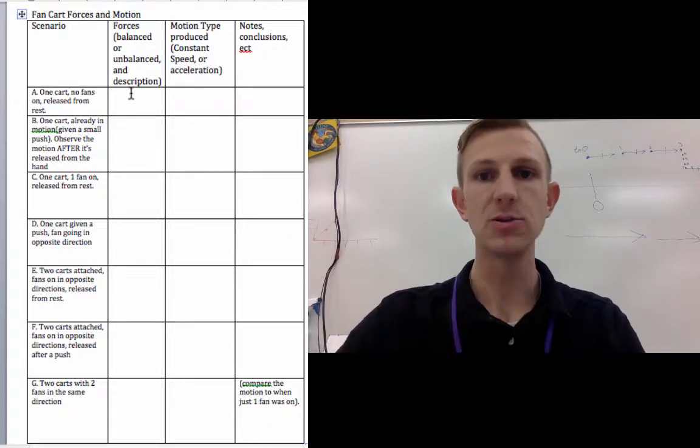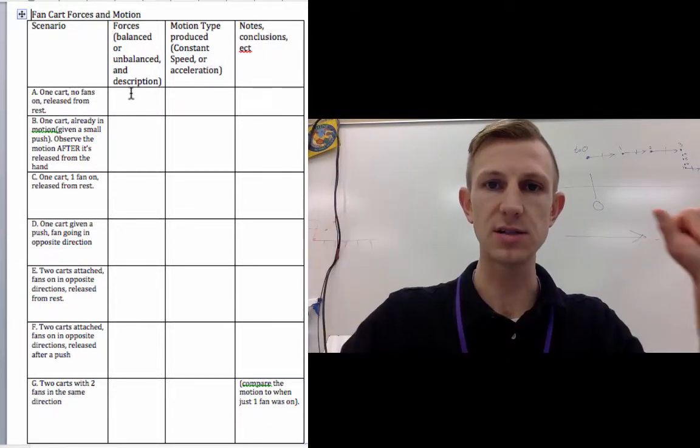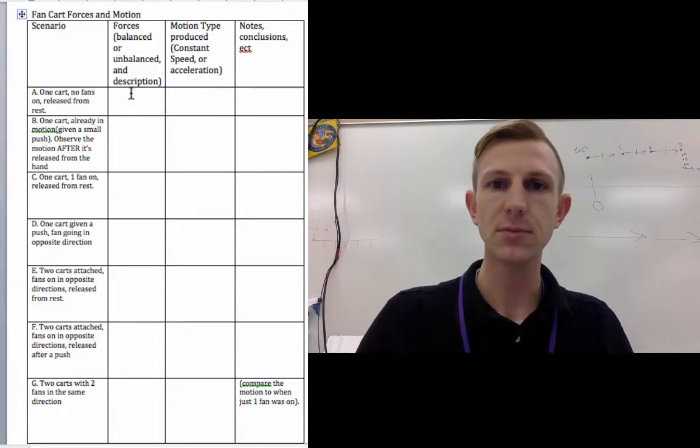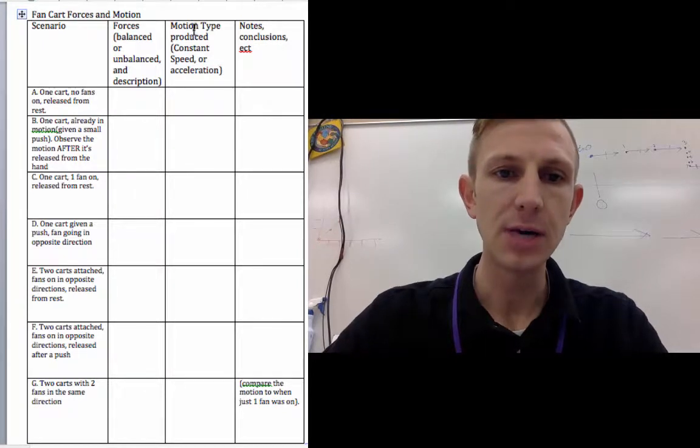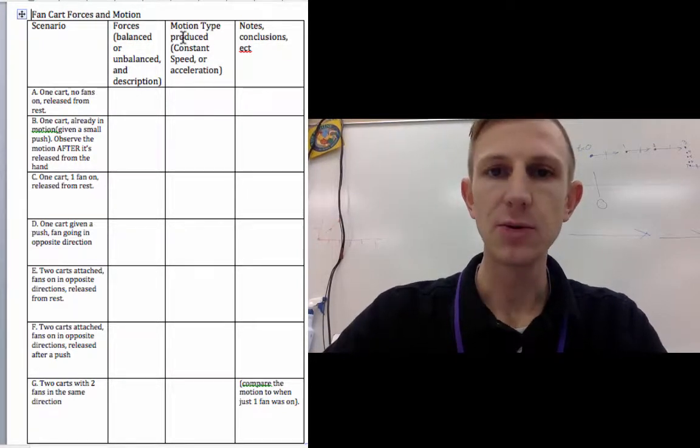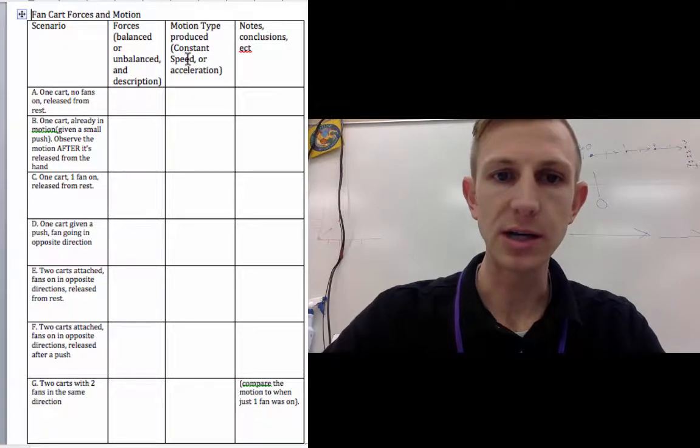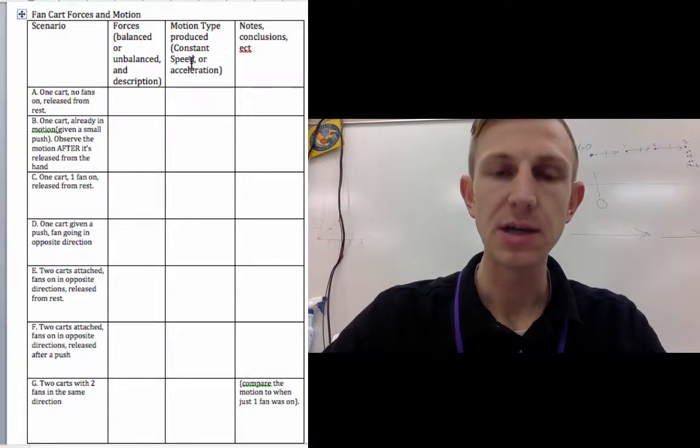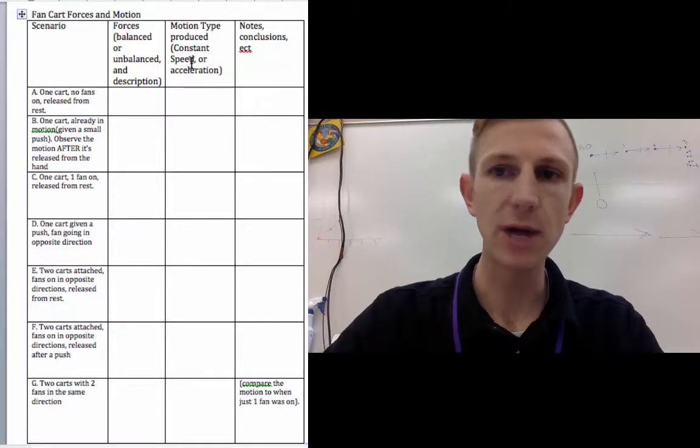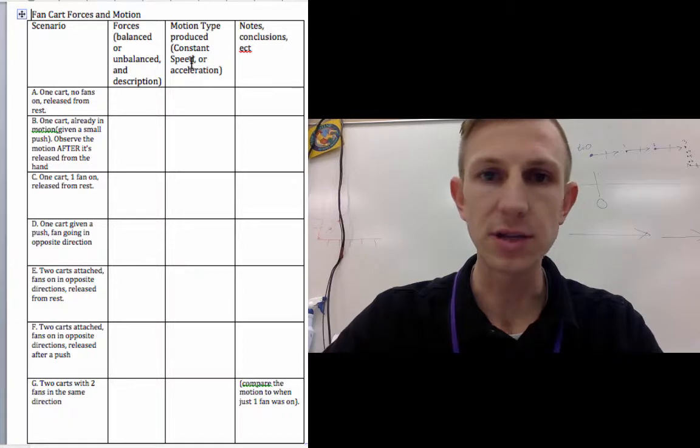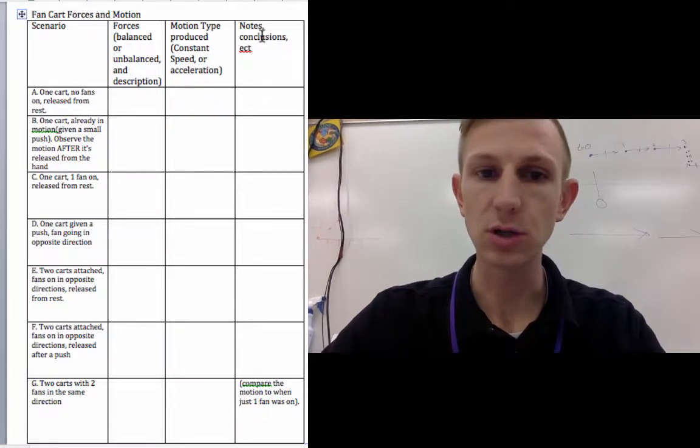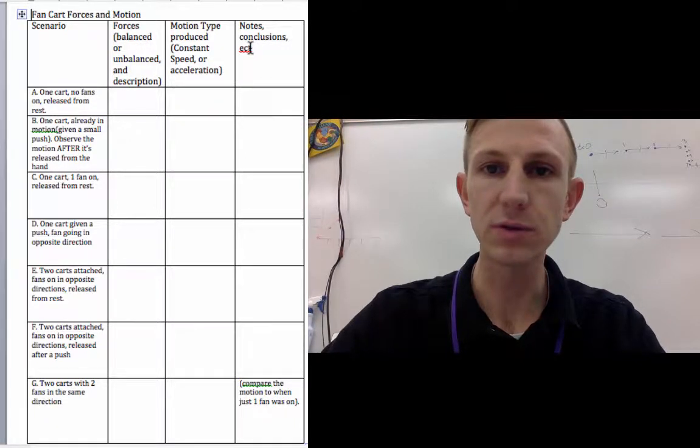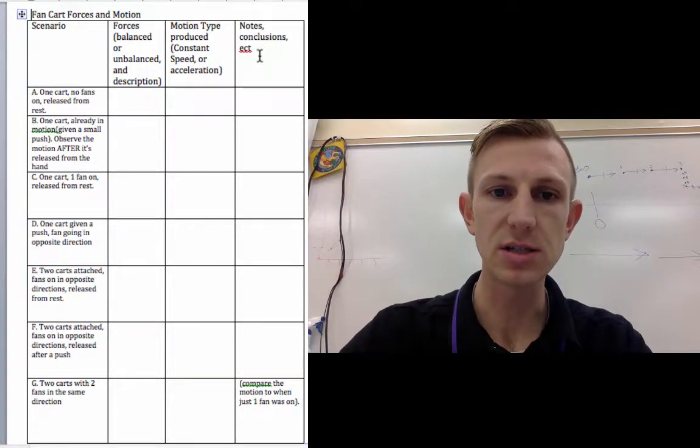If you want to write any kind of description after that, like two fans opposite directions, two fans same direction, whatever you want to write in there, okay. The next column right here, motion type - are we getting a constant speed or are we getting an acceleration of some sort? Now you should again look at your fixed reference points, maybe scroll back in the video just to see whether things are speeding up or slowing down.